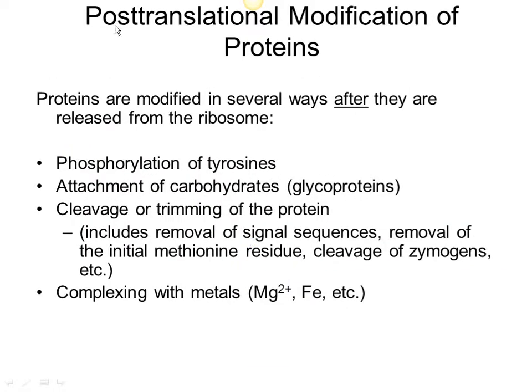After the protein is made at the ribosome, it will fold. The ribosome builds the primary structure of the protein, but then the secondary, tertiary, and quaternary structures will form after that. Other things can be added or trimmed off of the protein — we call these post-translational modifications, meaning modifications that happen after translation.